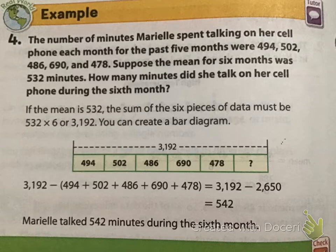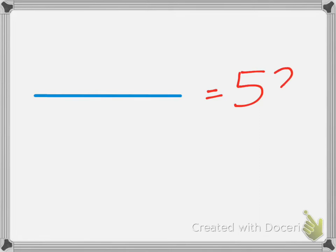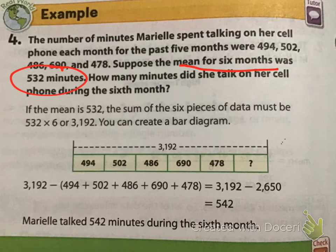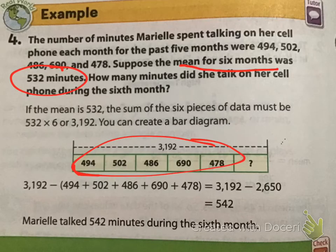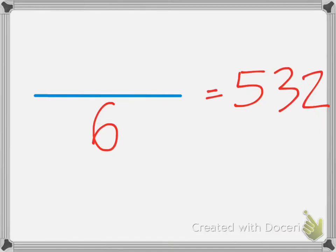Previously, we knew all of these numbers and we knew how many they were and we found out what it was equal to. In this case, since we already know what it's equal to, what we're going to be doing is essentially isolating the variable. So, let's look. We know that the total is 532 minutes. That is the mean for six months. So, it's 532. And how many months, the number of data points, goes at the bottom.